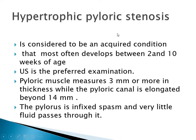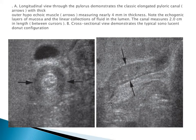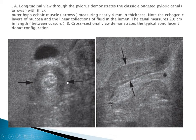In hypertrophic pyloric stenosis, an acquired condition most often developing between 2 and 10 weeks of age, ultrasound is the preferred examination. The pyloric muscle measures 3 mm or more in thickness while the canal is elongated beyond 14 mm. The pylorus is in fixed spasm and very little fluid passes through it. This longitudinal and transverse view of pyloric stenosis shows the pyloric canal elongated beyond 20 mm with wall thickening and a donut configuration in transverse view.